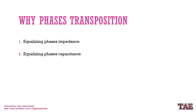First of all, we need to know why we need to make phase transposition. An overhead line with vertical arrangement between phases — the clearance or the distance between phases and phase to ground will not be equal or the same. So the parameter for each phase will be different, like inductance and capacitance. So when we make transposition, the overall inductance and capacitance for each phase will be the same, so the parameters for each phase will be equal.